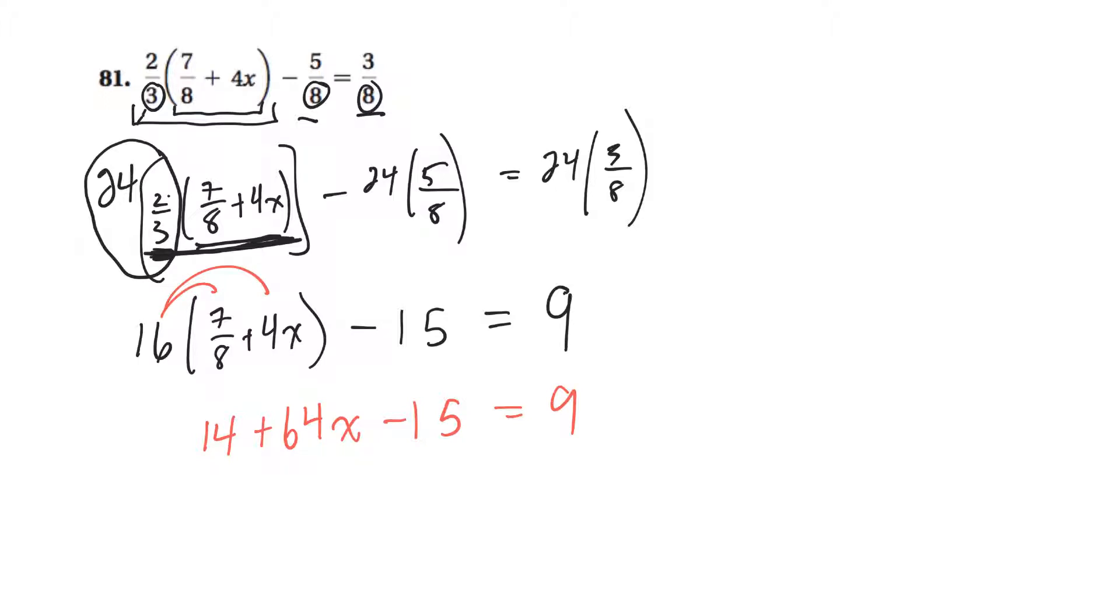So let me see, yeah. Probably collect these two. So I'll have 64x, and then 14 take away 15 is a negative 1, is equal to 9. And then I'll add one to both sides. So I'll have 64x is equal to 10. And I'll continue on up here. So 64x is equal to 10.